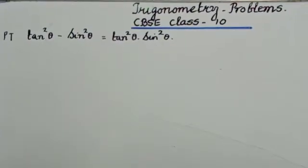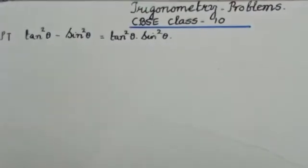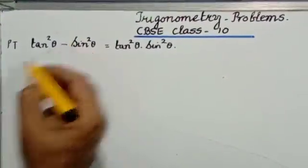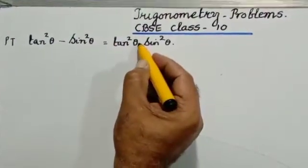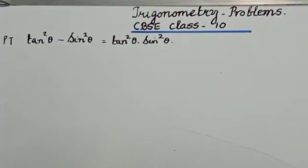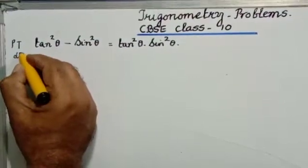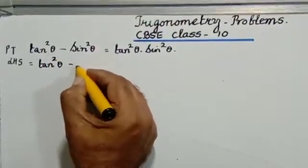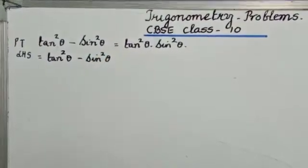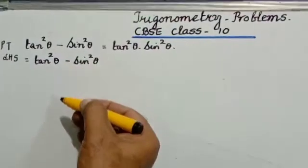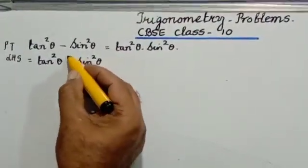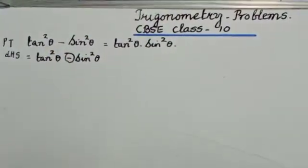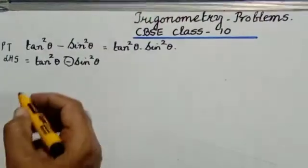If you see the problem, it is a trigonometric equation. You have two sides and on both sides you have the same terms. But on the left hand side the two terms are separated by a negative sign, and on the right hand side you have a multiplicative sign between the two terms. I will start from the left hand side. In the process of solving it, only this negative sign has to be replaced — the terms should be retained as they are and a multiplicative sign should come in between.